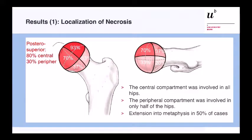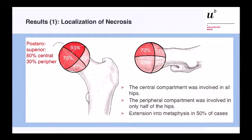In 93% of all cases, we found AVN in the anterior superior central aspect of the femoral head, followed by the posterior superior central aspect, with the remainder distributed around the femoral head. The central compartment was involved in all hips, the peripheral compartment in only half of the hips, and in 50% of cases there was extension into the metaphysis.